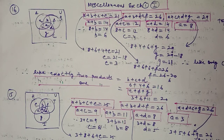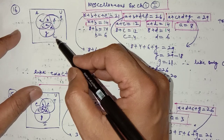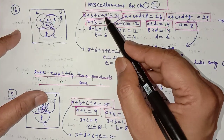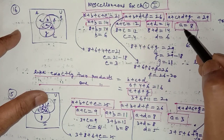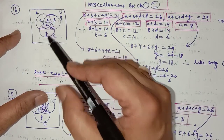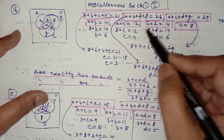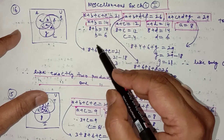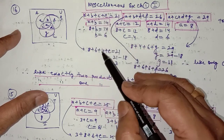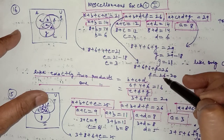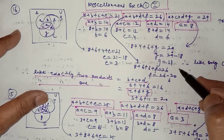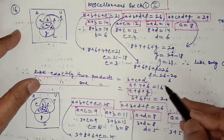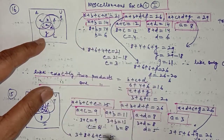You have to find how many persons like only product C, that is the value of g. Seven pieces of data are given, so you can find all values of a, b, c, d, e, f, g. Replace a = 8 into the equations: you get d, then c, then b. When you substitute a, b, c into the first equation you get e; substitute a, b, d to get f; substitute a, c, d to get g. The answer for the number of persons liking only product C is 11.